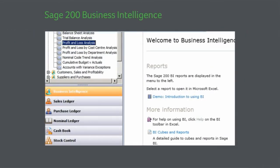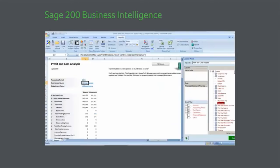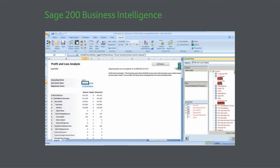Easy to use and analyse, information reports can be set up using a range of templates based on Microsoft Excel format. These can be customised to suit the needs of particular parts of your business. Sage 200's award-winning business intelligence analytic tool takes report design to a new and more detailed level.